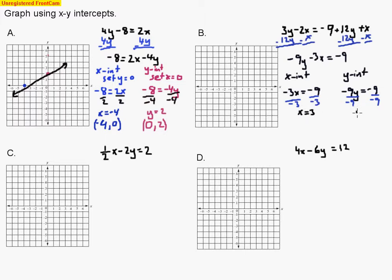So x equals 3 and y equals 1 — negative 9 divided by 9 makes positive 1. Our two ordered pairs are (3, 0) for the x-intercept, because I put 0 in place of y, and (0, 1) for the y-intercept, because I put 0 in place of x. Over 3 to the right, up 0, and over 0, up 1 — those are the two intercepts and we draw the line. That's the fast way: just cover up one term to find the other intercept.